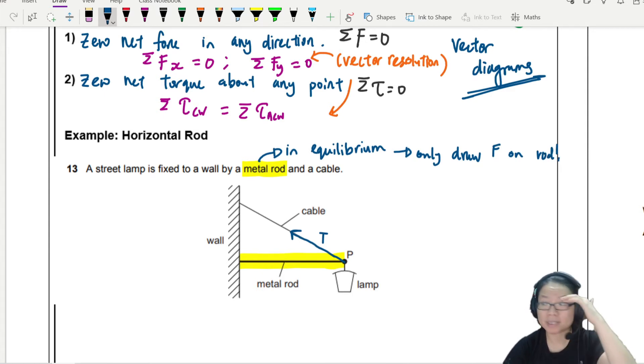What else? Teacher, metal rod got weight. You are right. Metal rod has weight. So I'm going to draw maybe, let's assume this is uniform. So right somewhere in the middle is the center of gravity. So the MG will act downwards. What else? Well, second thing is that the lamp will pull the metal rod down. So you will have another MG here.